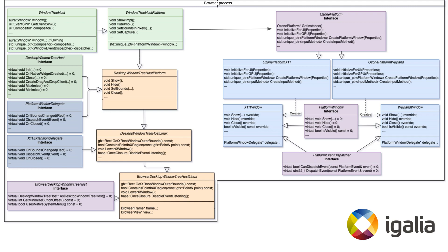On the right side is Ozone. As said before, it's based on public interfaces, and all the implementation details are hidden and aren't visible from the outside. The core class, which is also a singleton, is OzonePlatform. It has methods that the platform should implement, such as initialization of the UI and GPU parts, spawning windows, and so on. Here two Ozone implementations are shown: X11 and Wayland. In Wayland, we have a WaylandWindow class that implements PlatformWindow, which is then used by Aura to communicate with Ozone windows. You can also see a PlatformEventDispatcher that OzoneWindow implements, so that it can send out events processed by the event source in Ozone.